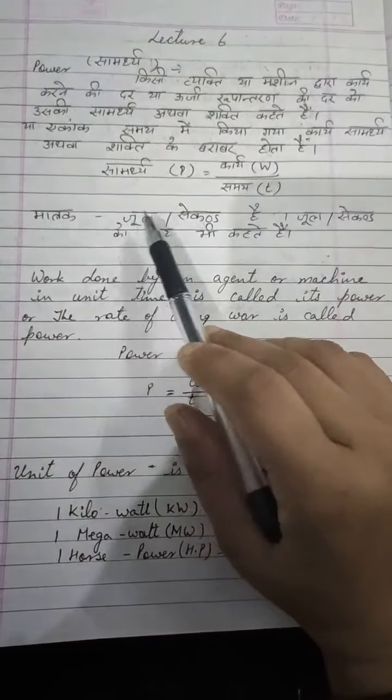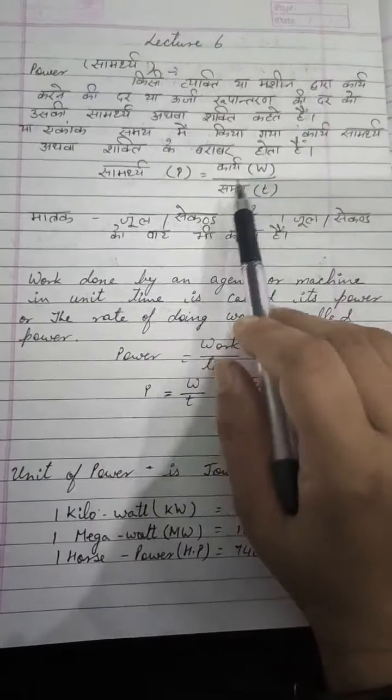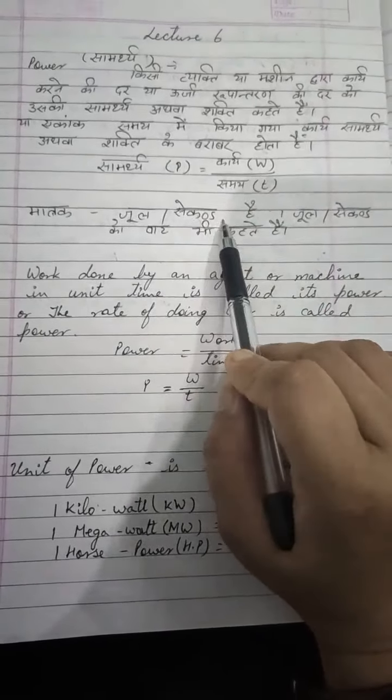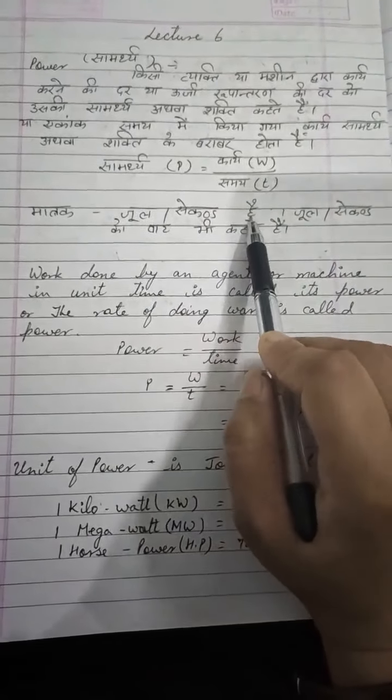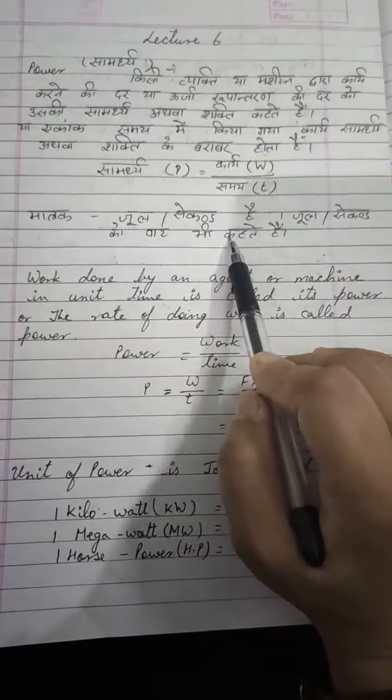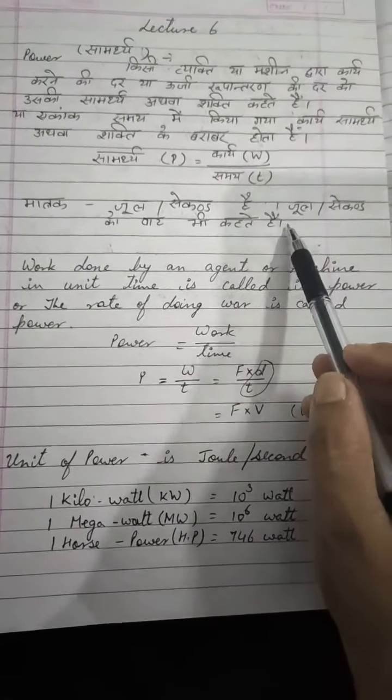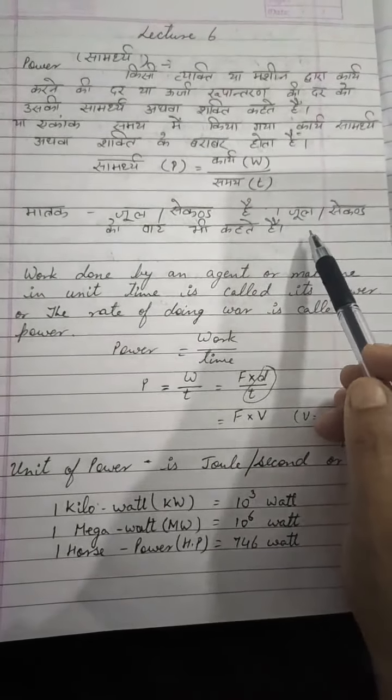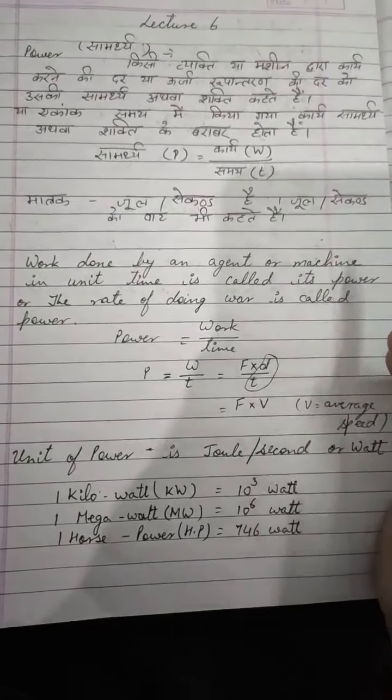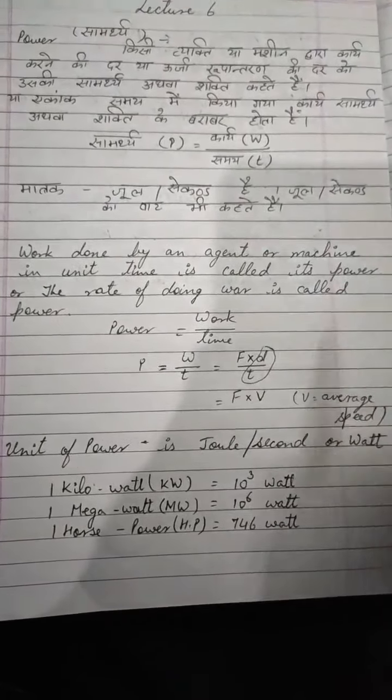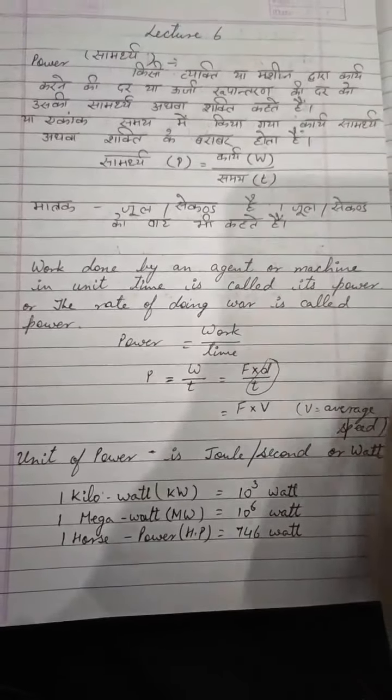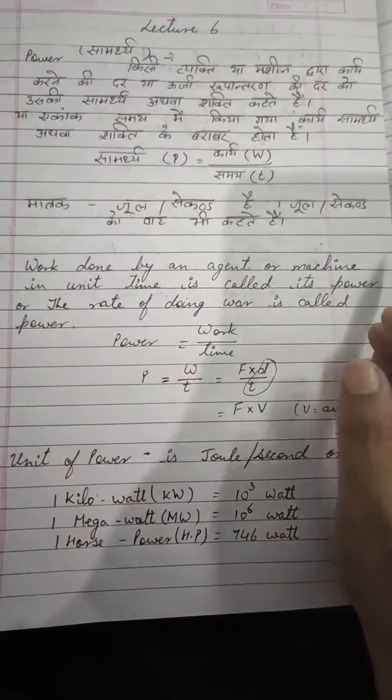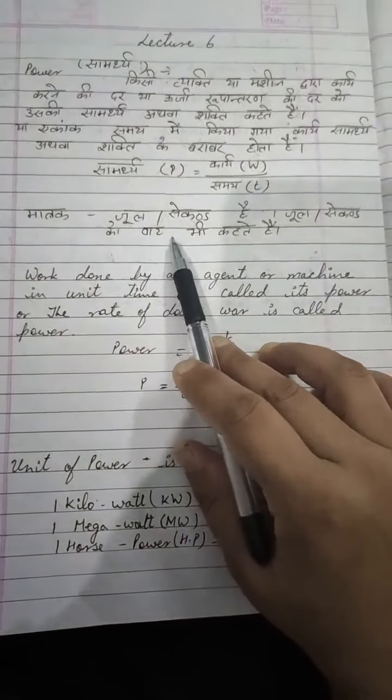The unit is joule per second. This is joule per second. So what is the unit called? As you can see, bulbs have 60W or 70W. That much electricity, that much light giving capacity it has, that is why it is called watt.